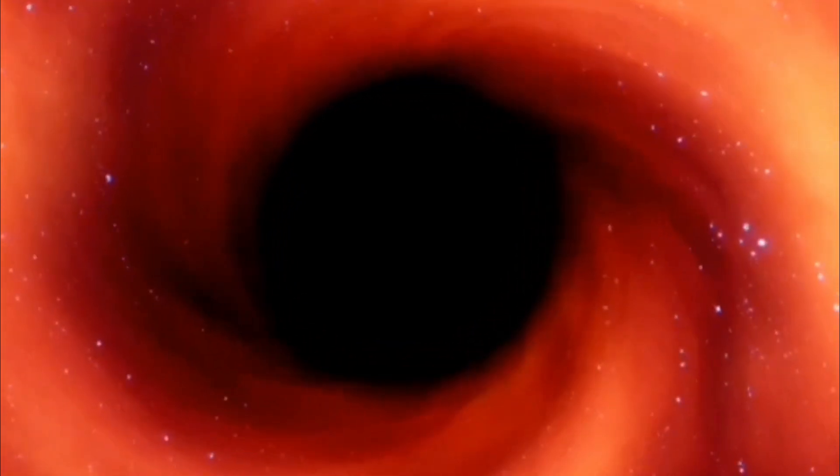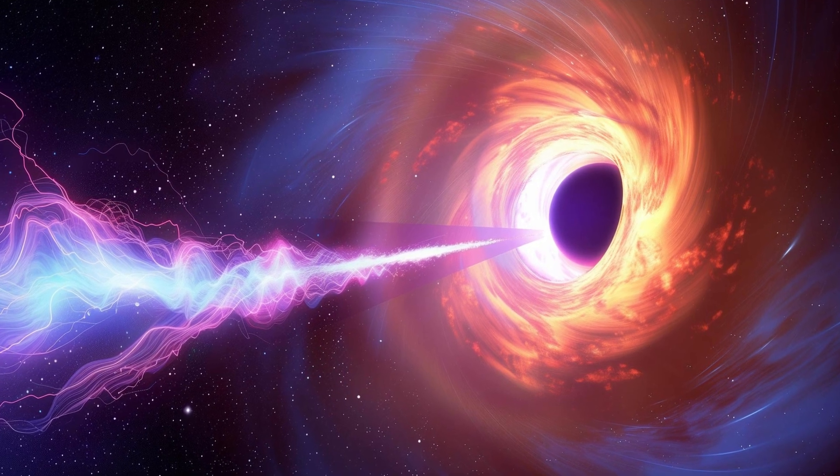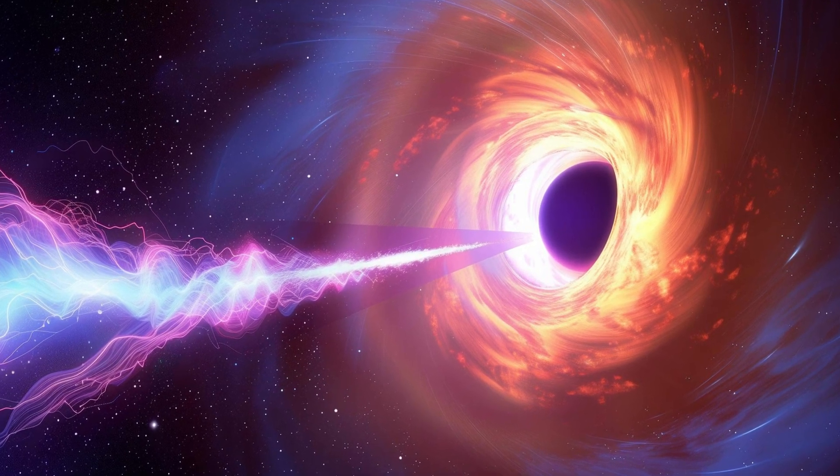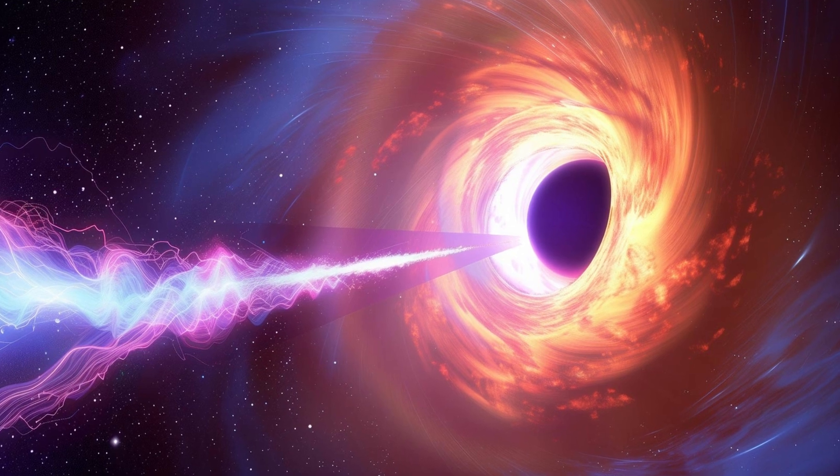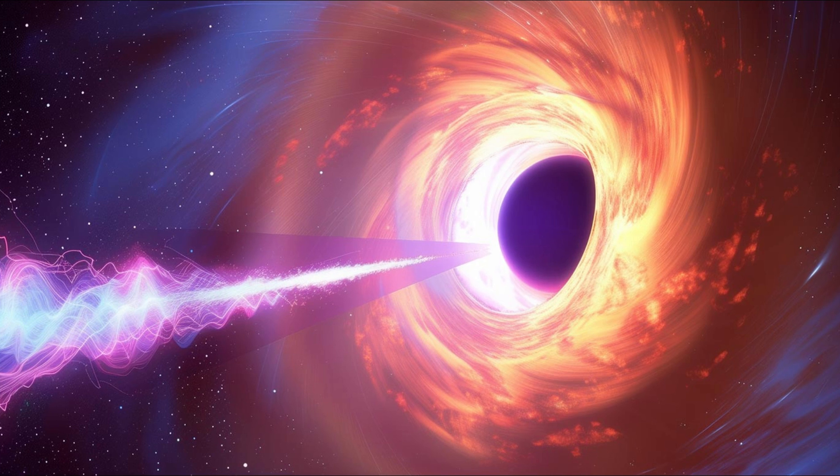An artist's illustration depicts the phenomenon. Matter spirals into the black hole while a high-speed jet blasts outward. As electrons in the jet travel near the speed of light, they collide with CMB photons, boosting their energy into the X-ray spectrum.